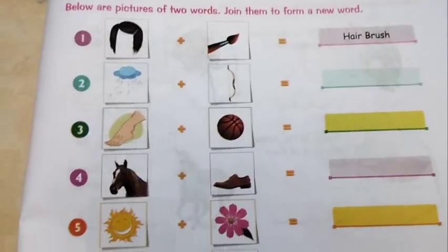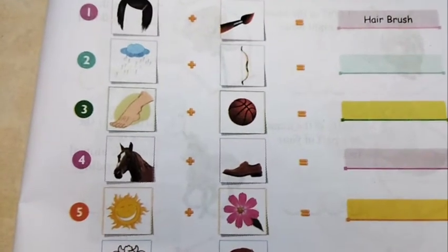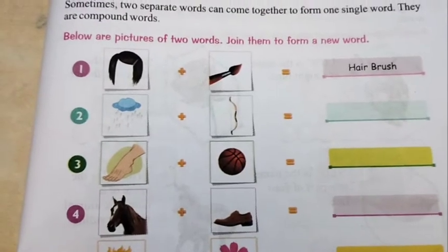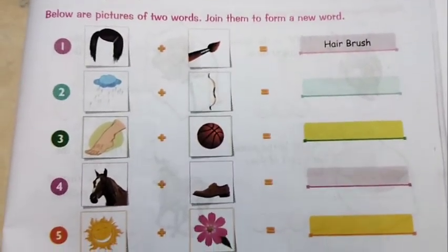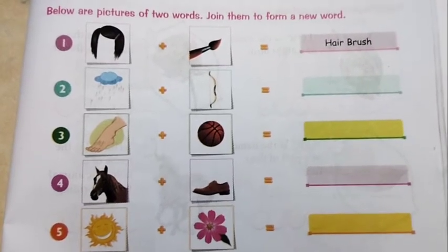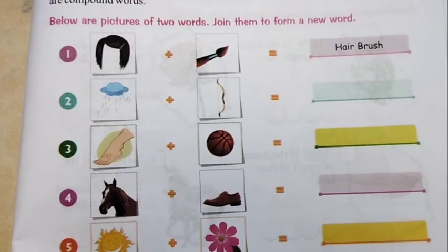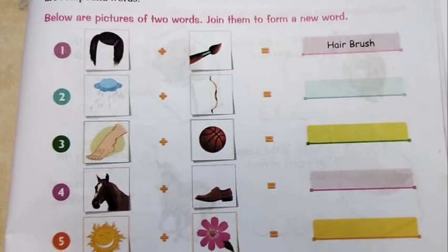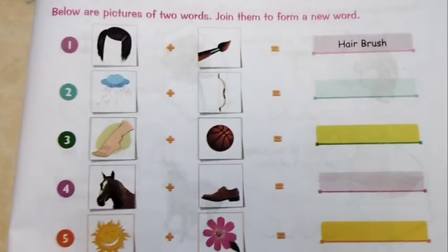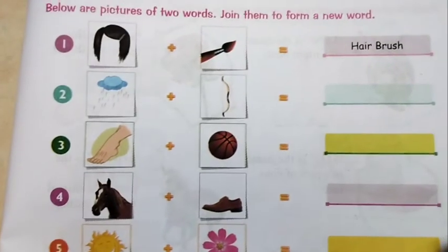Similarly, there are many more compound words. For example, butterfly, chickenpea — these words are also formed by joining two separate words to create a new word with a different meaning. This is compound words, which you have to do today in your books. You can also search for other compound words that you use in your everyday life and observe them around you.